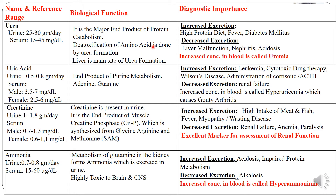The diagnostic importance of urea: whenever there is increased excretion of urea, it may be due to high protein diet, fever, or diabetes mellitus, to name a few causes. Decreased excretion indicates liver malfunction, nephritis, and acidosis.